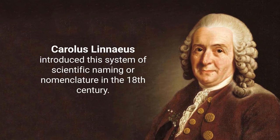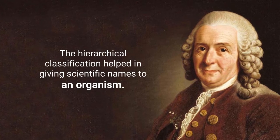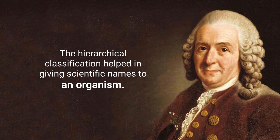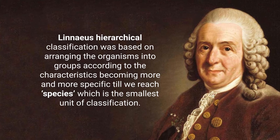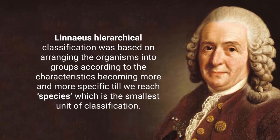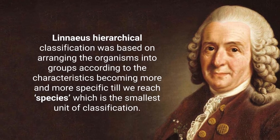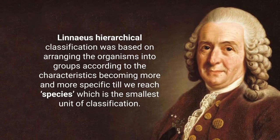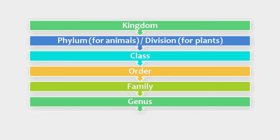The idea of binomial nomenclature was given by Carolus Linnaeus in the 18th century, because naming any animal or plant on the basis of all levels of classification would be very difficult due to the hierarchical nature of classification. Linnaeus classified organisms hierarchically by arranging them into groups according to characteristics becoming more and more specific until reaching the species level — the smallest level of classification. The hierarchy is: Kingdom, Phylum, Class, Order, Family, Genus, and Species.